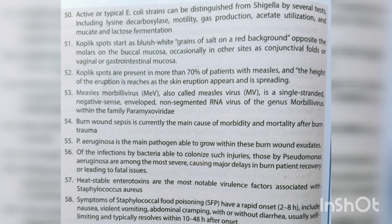Koplik spots start as bluish-white grains of salt on a red background, opposite the molars on the buccal mucosa, occasionally at other sites such as conjunctival folds or vaginal or gastrointestinal mucosa. Koplik spots are present in more than 70% of patients with measles. Measles (Morbillivirus) is a single-stranded negative-sense enveloped non-segmented RNA virus of the genus Morbillivirus within the family Paramyxoviridae.